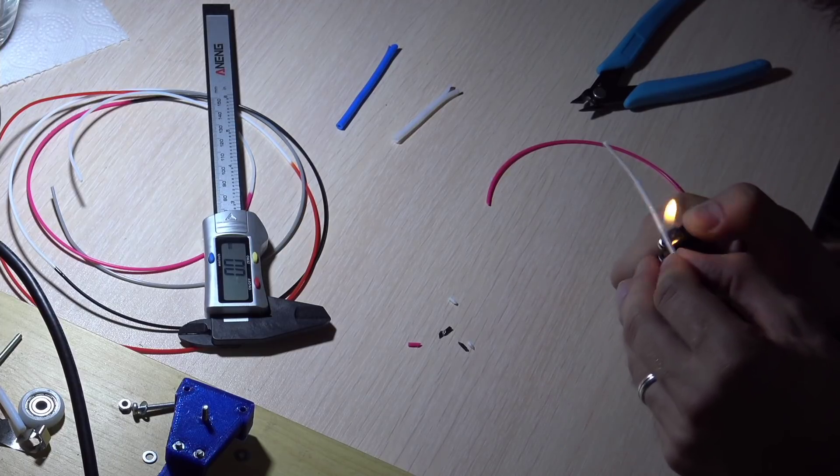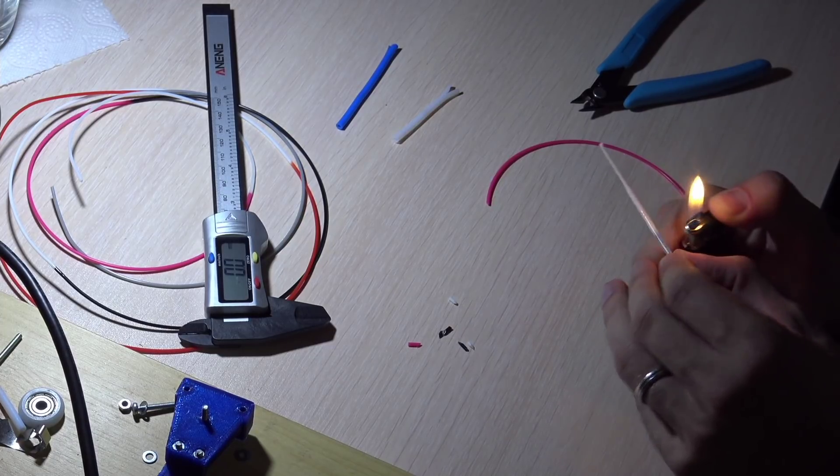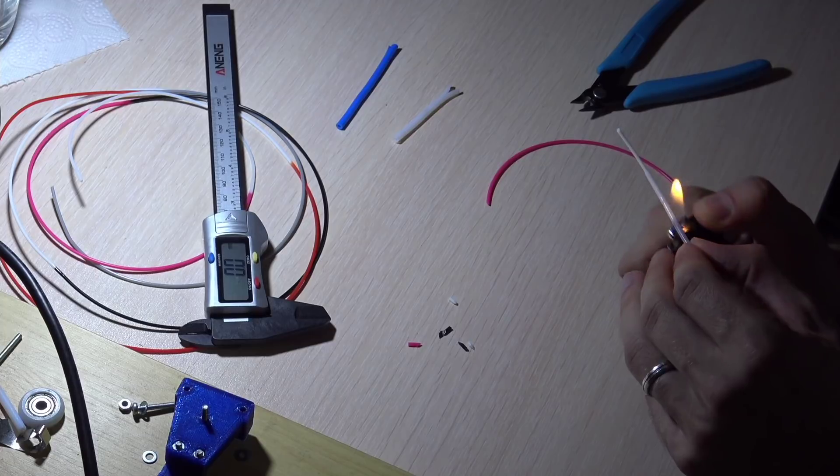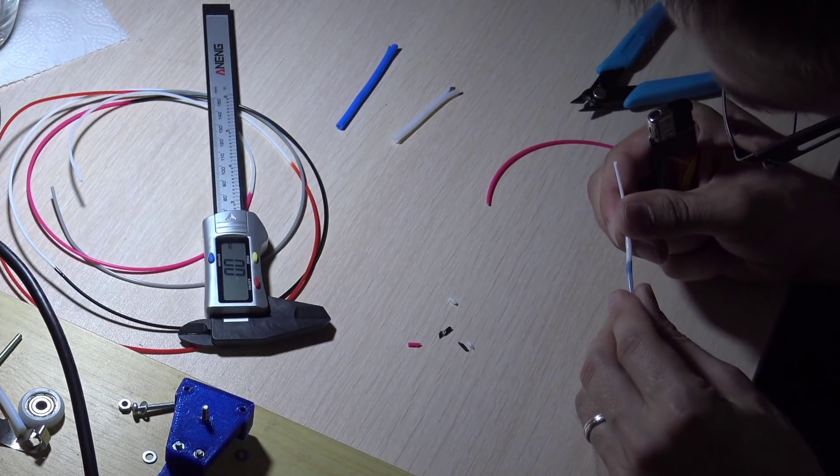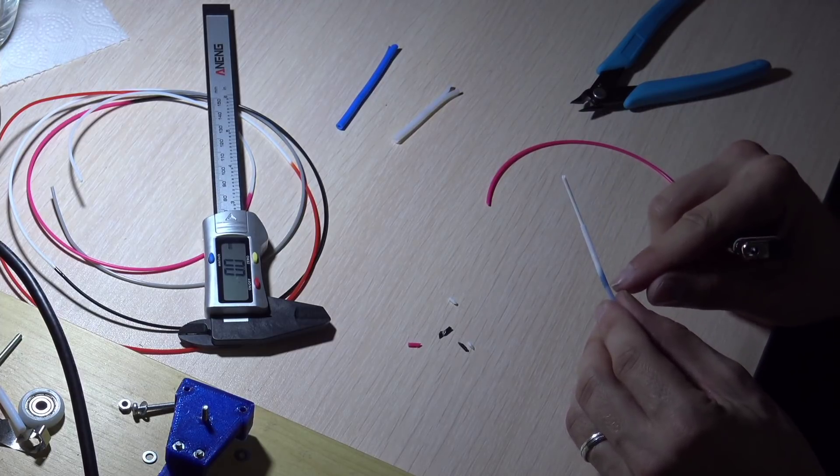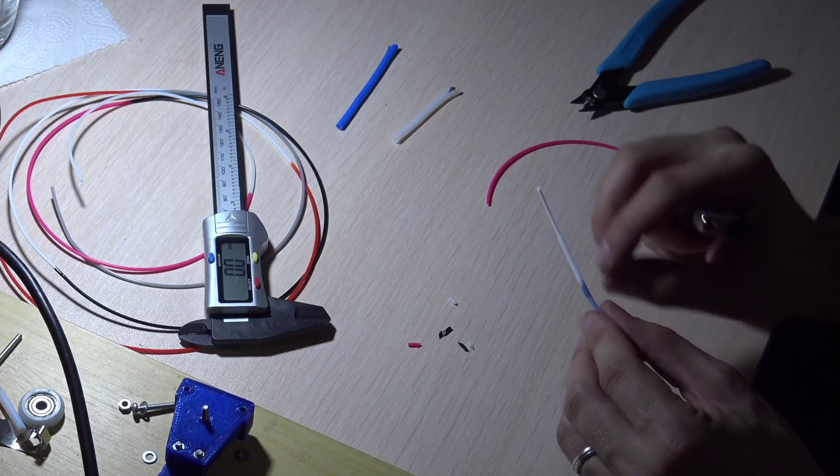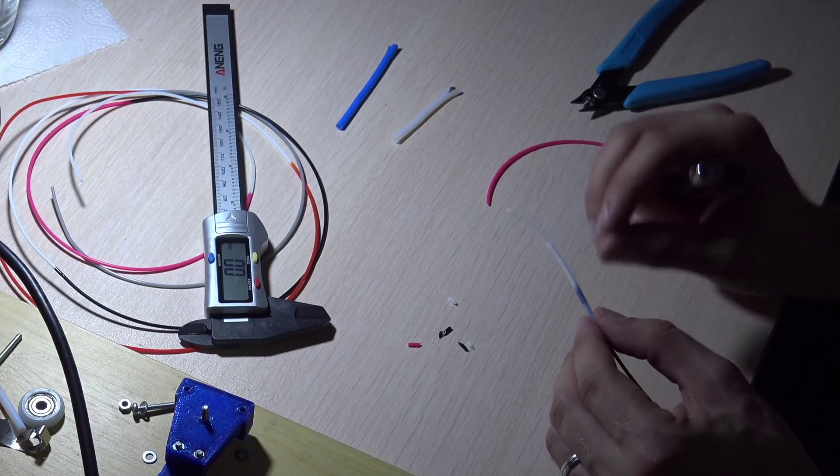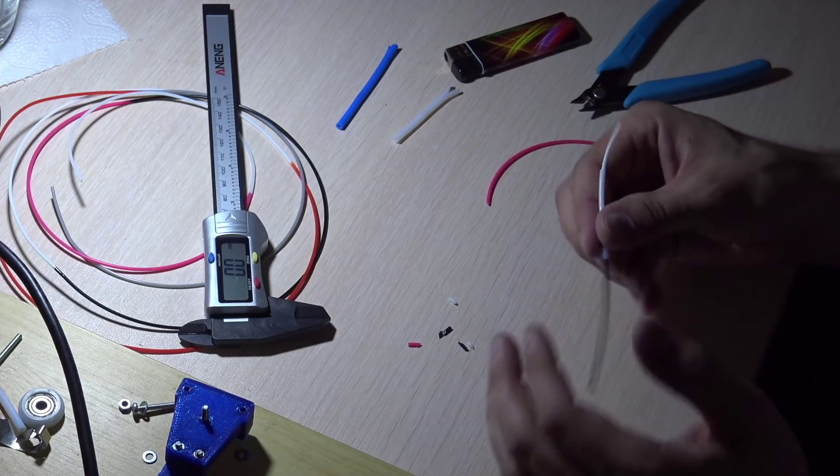When you see that it's a little bit melting, just stop and push them together. You will recognize it by the inner wall, because there will become darker spots. Because the filament will melt and it will touch the inner wall, so you will see that there is something happening. So just in that moment, stop and join it.